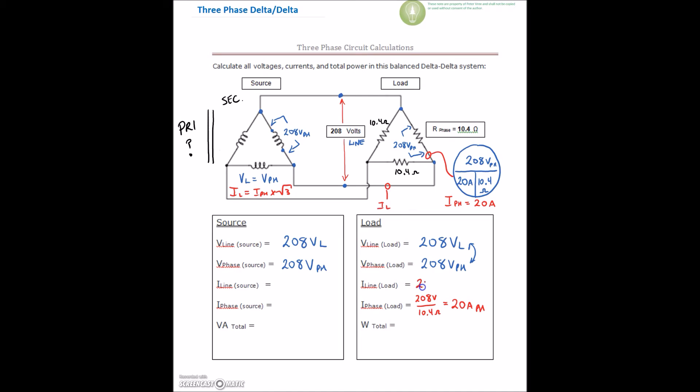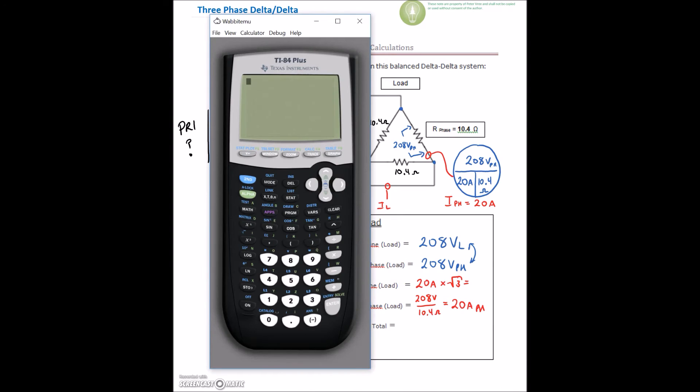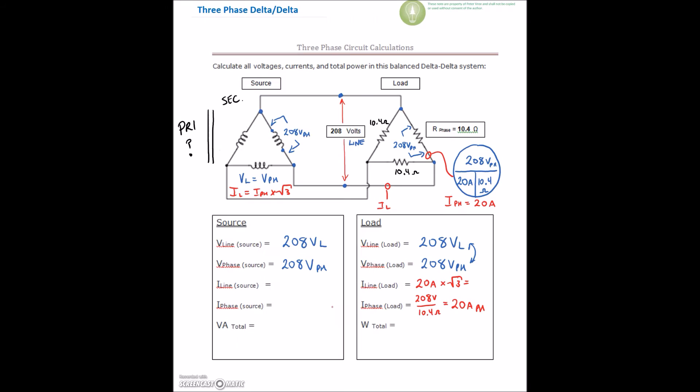we're going to take our 20 amps, and we're going to multiply that by root 3. So let's find out what that is. So we need to find our line current, so we'll do 20 amps. And we're going to multiply that by the square root of 3. And that gives me 34.64 amps. And that is my line value.